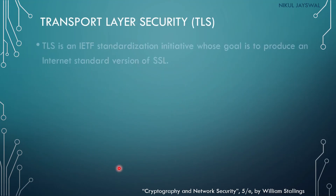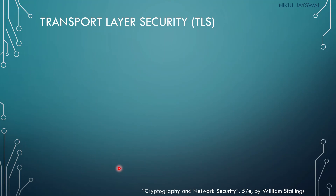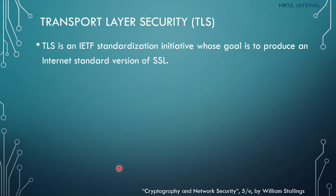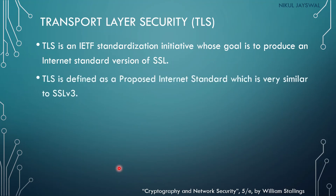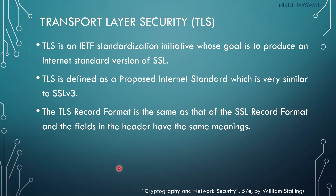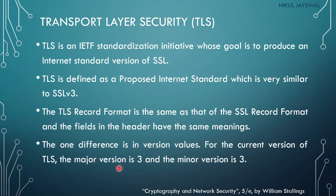The next topic is Transport Layer Security. SSL is the concept, and the actual implementation standardized by the IETF is called Transport Layer Security — TLS. TLS is defined as a proposed internet standard very similar to SSL version 3. The TLS record format is the same as the SSL record format, and fields in the header have the same meaning. The one difference is the version value: for the current version of TLS, the major version is 3 and the minor version is 3.